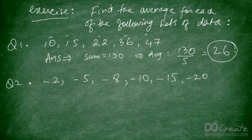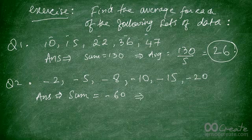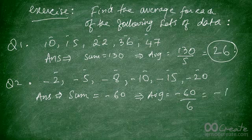Now let's check the second answer. If you add up all of those values, the sum is going to be equal to minus 60. Therefore the average is going to be equal to minus 60 divided by 6 — there are 6 values in this set of data — so you get minus 10. The answer is minus 10.